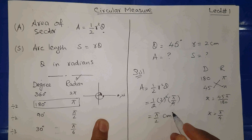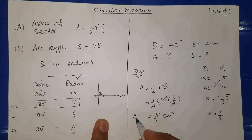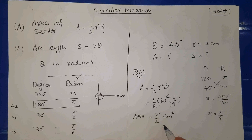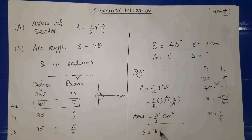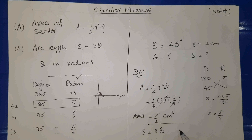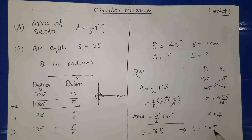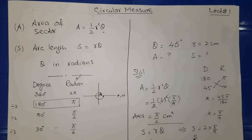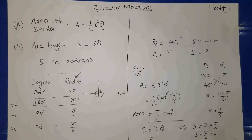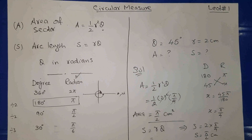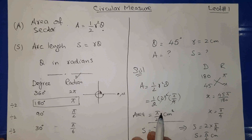Similarly, find the arc length: S = r θ, where r = 2 and θ = π/4, giving S = π/2 cm. This is the way to find arc length. Let's move on to some examples.